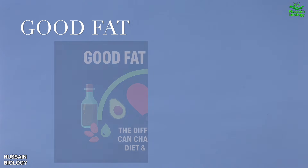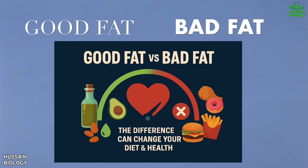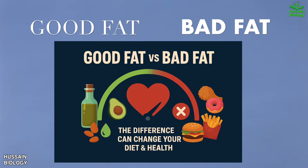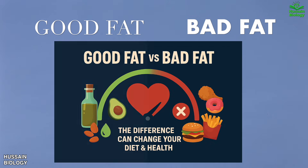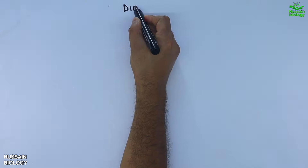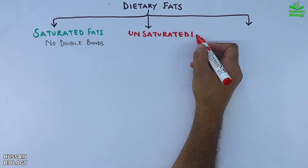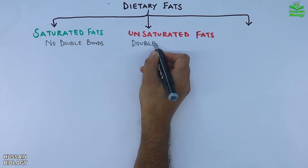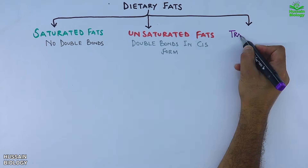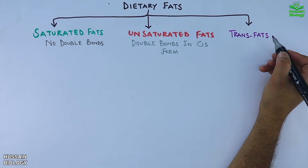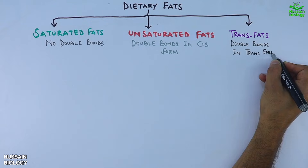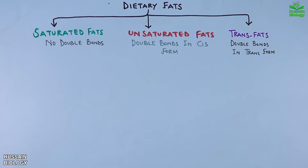In this video we are going to discuss good fats versus bad fats, and the difference can change the way you look at your diet. Dietary fats are mainly divided into three categories: saturated fats, which have no double bonds; unsaturated fats, which contain double bonds in the cis form; and trans fats, which contain double bonds in the trans form.